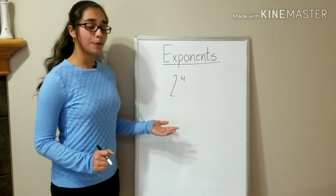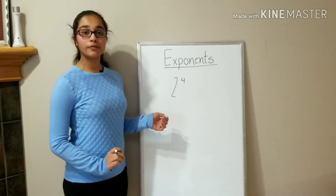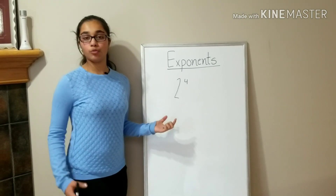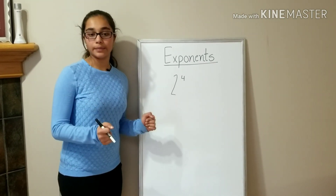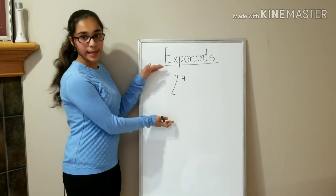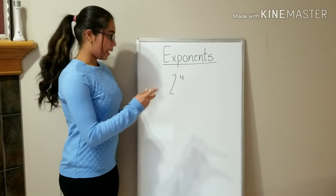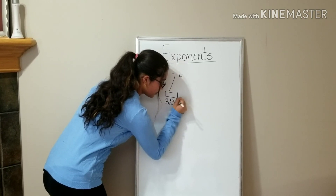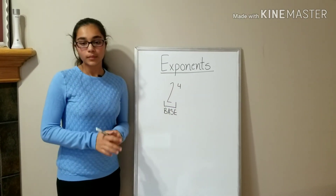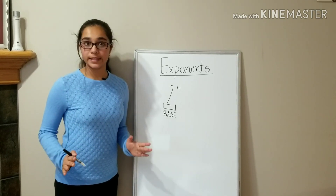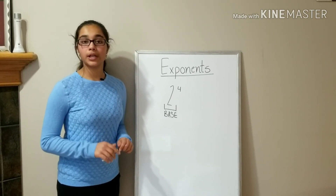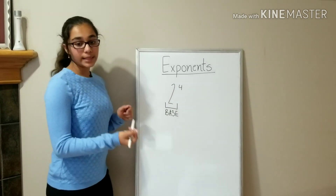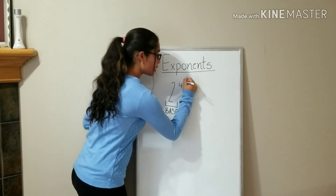Let's talk about why exponents look this way. Exponents involve two numbers. The first number is the one that gets multiplied repeatedly a certain number of times, and it's written in full size. It's called the base. The second number tells us how many copies to make of the base. It's written in a smaller form at the very top of the line, and it's called the exponent — or in other words, it's called the index.